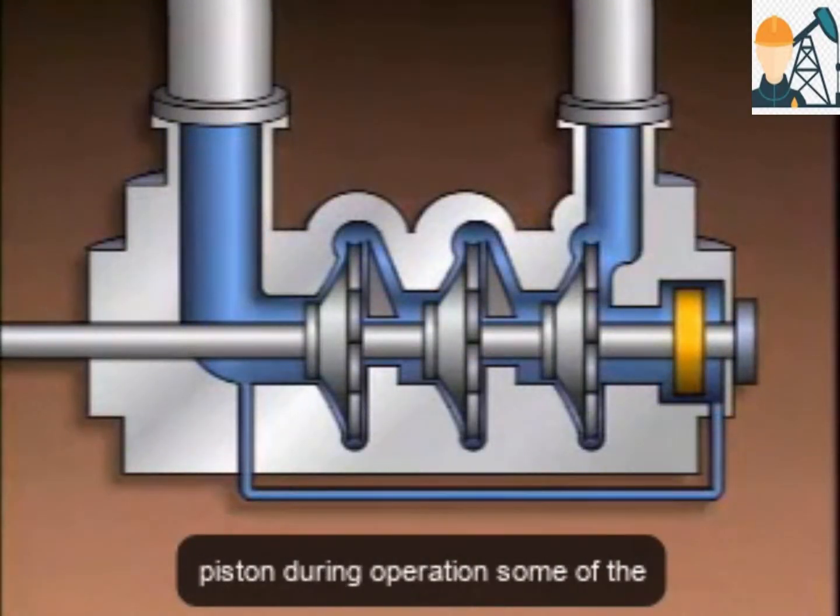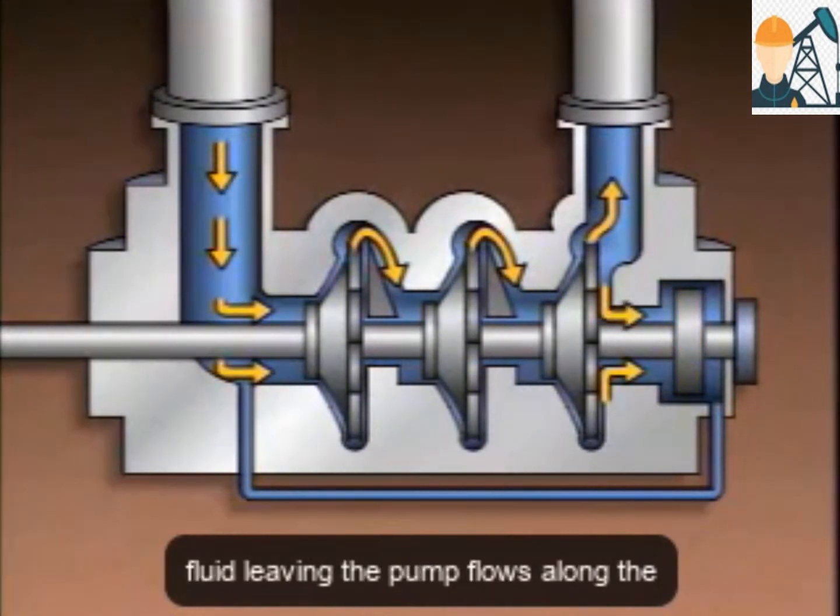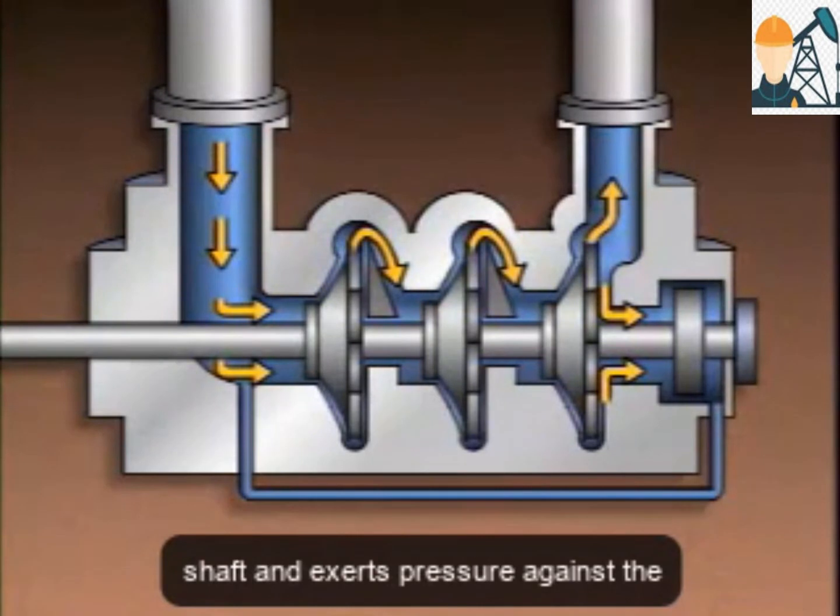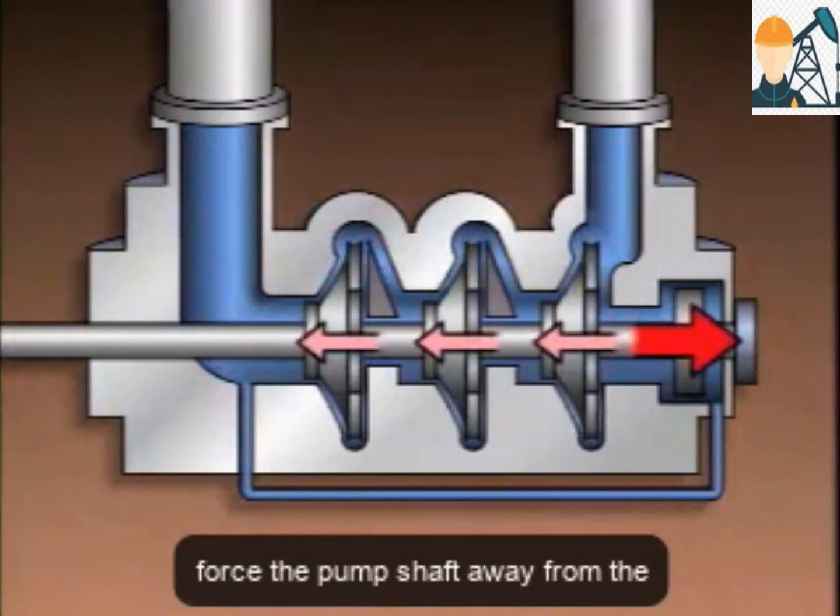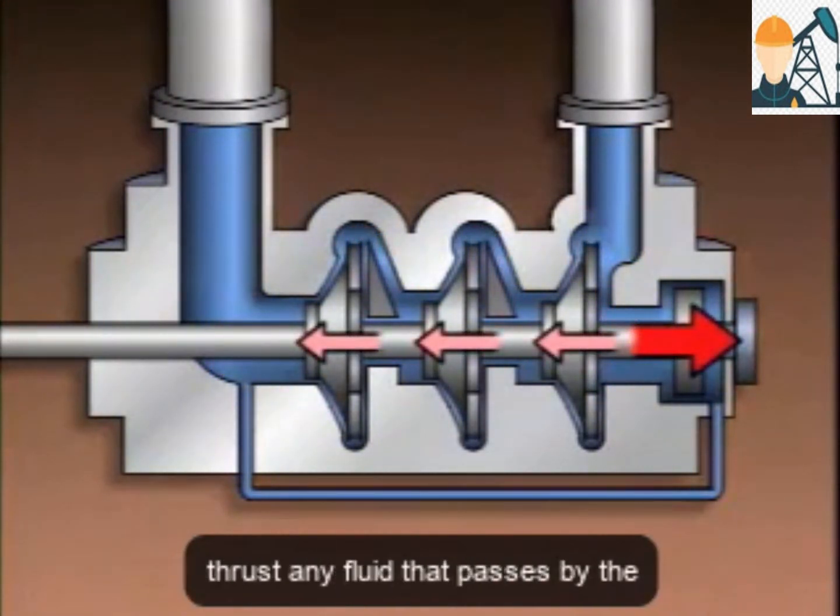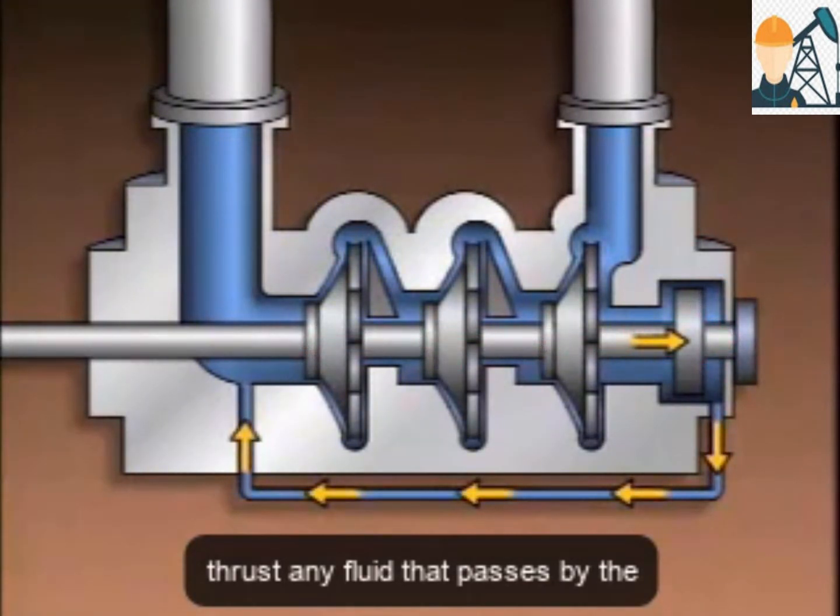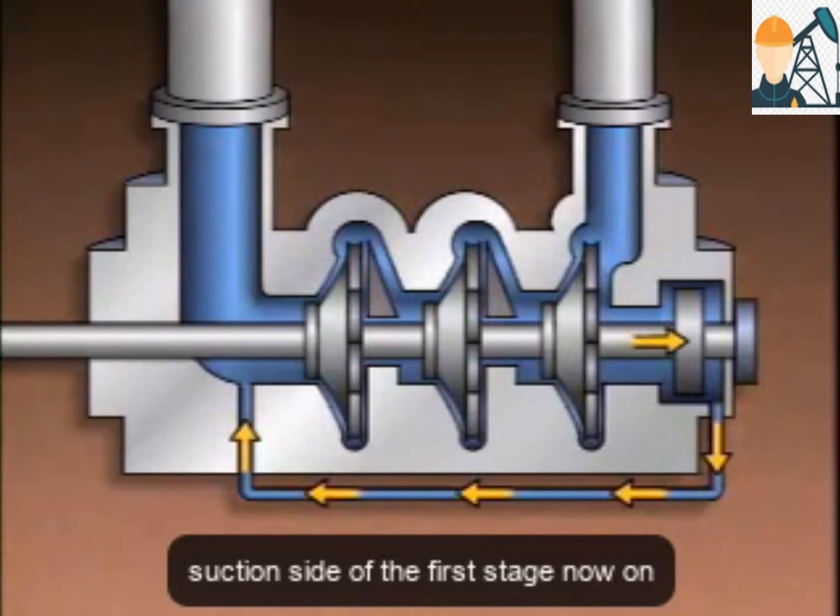This pump has a balance piston. During operation, some of the fluid leaving the pump flows along the shaft and exerts pressure against the balance piston. That pressure tends to force the pump shaft away from the suction eyes and reduces the total thrust. Any fluid that passes by the balance piston is returned to the suction side of the first stage.